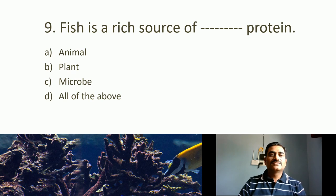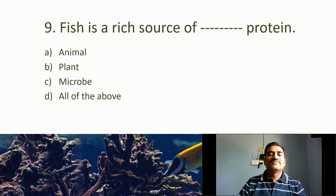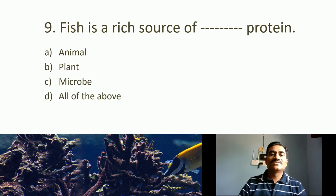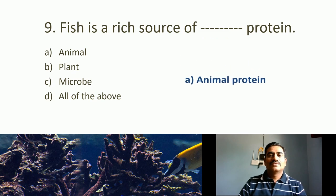Ninth MCQ: Fish is a rich source of what type of protein? Options: animal, plant, microbe, all of these. Fish are animals, so fish is a rich source of animal protein. The right answer is animal protein.